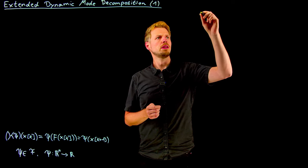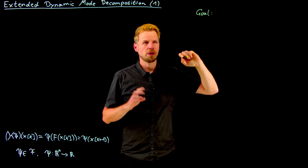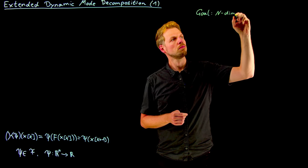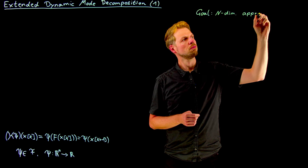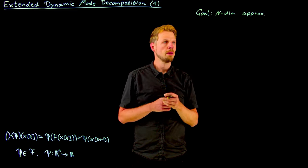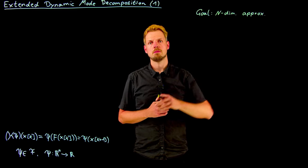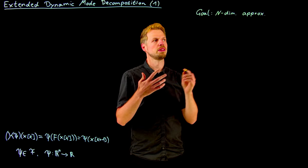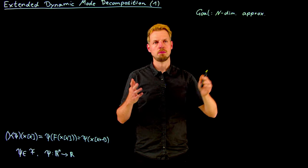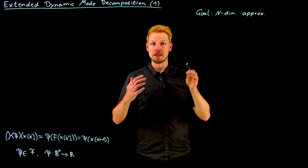So the goal that we need to follow here is to find an n-dimensional approximation. We are not interested in all possible functions but in a subset of functions that can be expressed by n basis functions. This n can become very large but still allows us to get away from functions and work with finite dimensional systems, namely the basis coefficients of these basis functions.